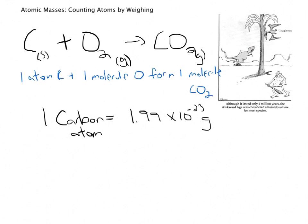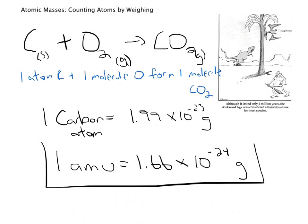Because they're so small, chemists have come up with a way to refer to their mass without using these exponents. Nobody wants to write times 10 to the negative 23 every time. So for chemistry, they have defined something called an atomic mass unit, and it is equal to 1.66 times 10 to the negative 24 grams.